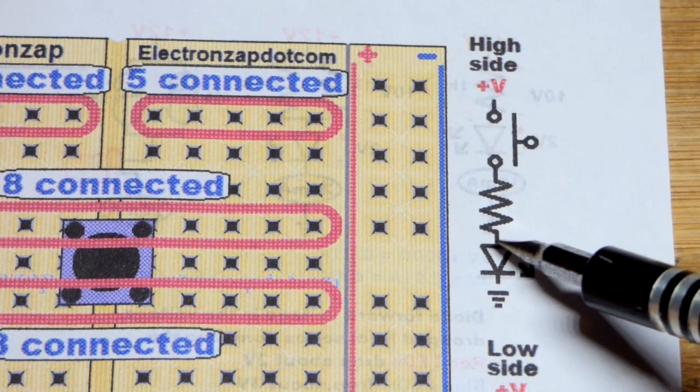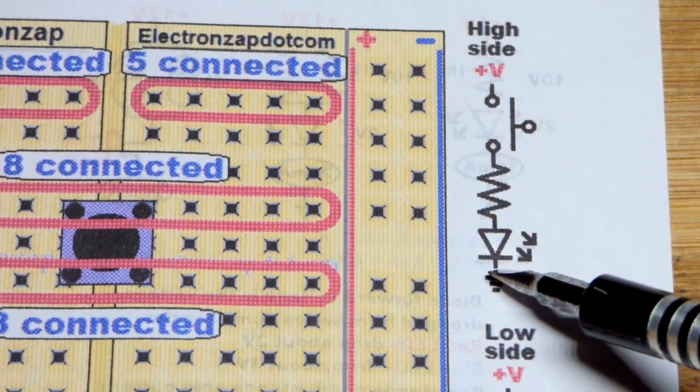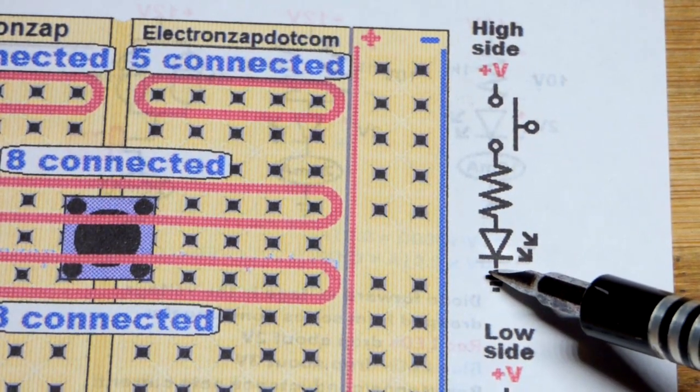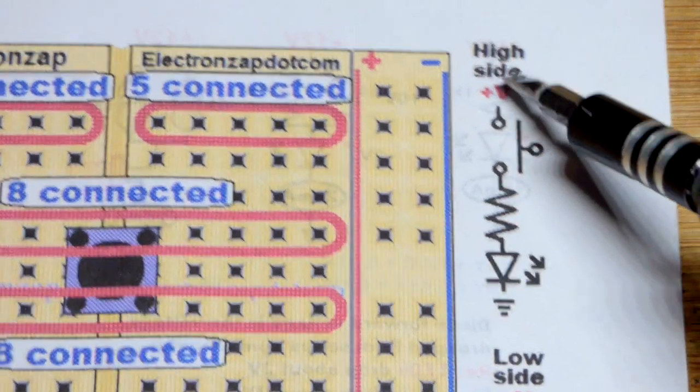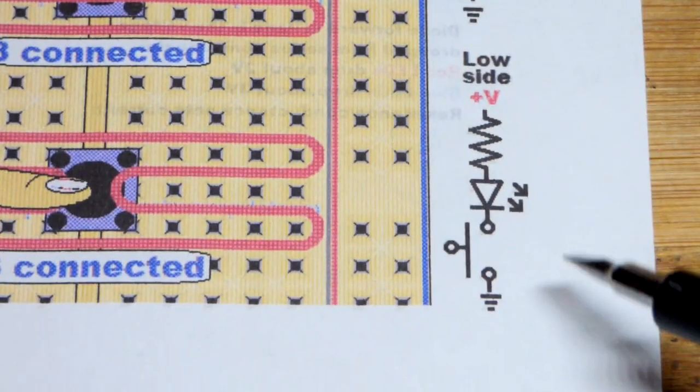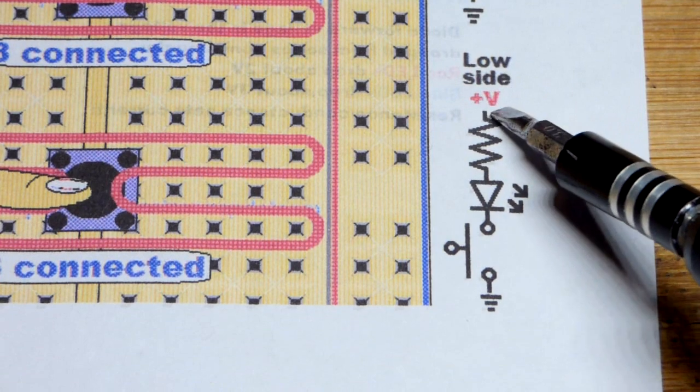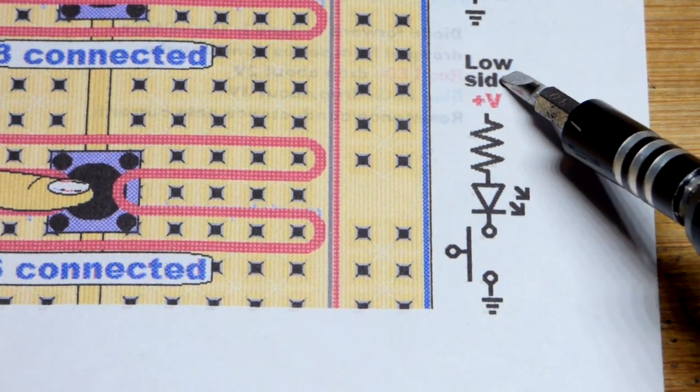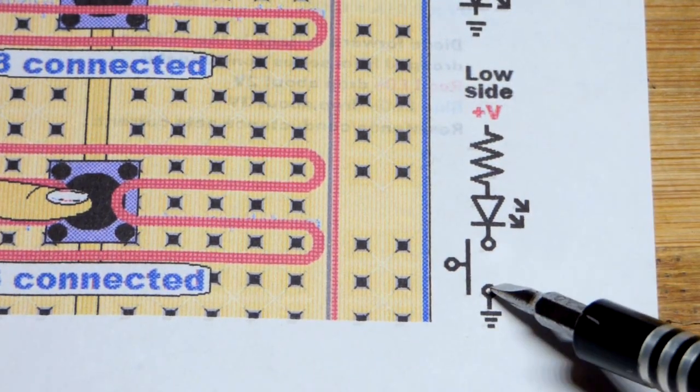But in any case we've got the switch, then the protective resistor, the LED, this is the order that you generally see components, especially switch-based components. Now, we can also put the switch on the low side. So we've got the switch on ground.